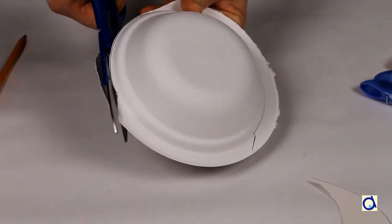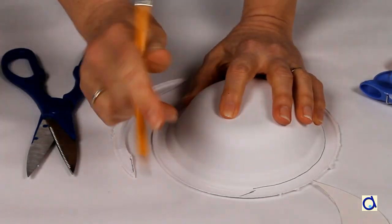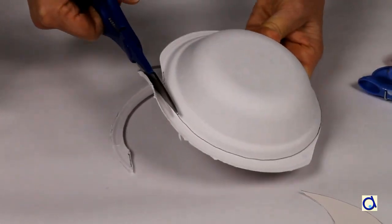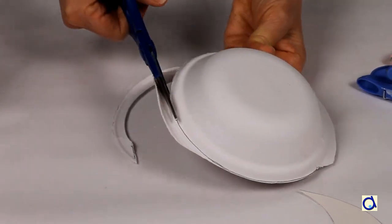Cut the flat edge all around the ball except where the visor will be attached. Along the edge where you will glue the visor, only remove the curved ridge.